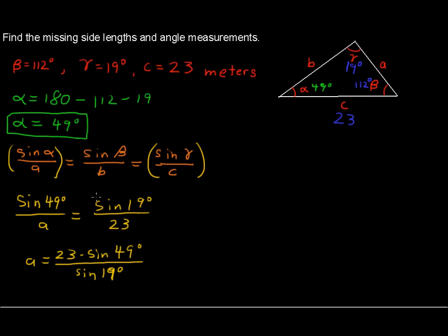That is, I multiplied A by each side and that cancels out the A here. And then I multiplied by 23. That brings it over to the sine of 49. And then divided by sine of 19. So that's how I got to this.